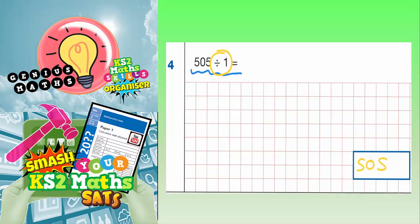And if you still wanted further evidence, you could do a bus shelter division method just to double check. So, we'd have 505 divided by 1. So, 1s into 5 would go 5 times, 1s into nothing would go no times, and 1s into 5 would go 5 times.